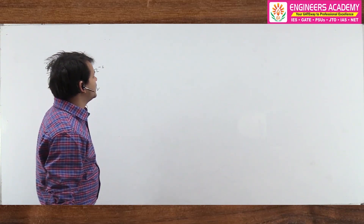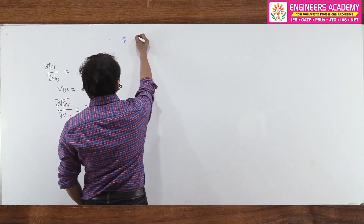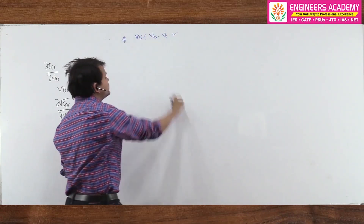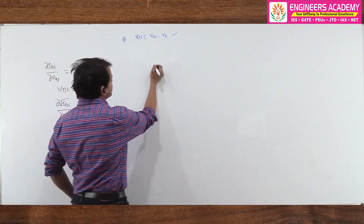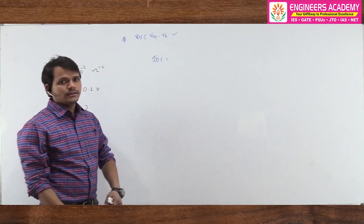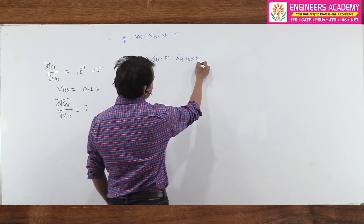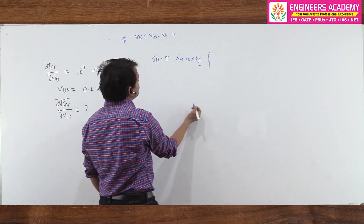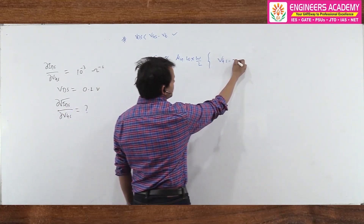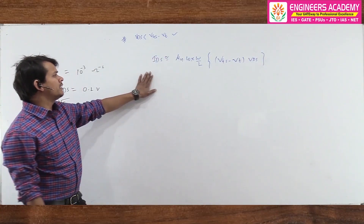First, let's write the equation for the linear region. Whenever the MOSFET operates in the linear region — that is, when Vds is less than (Vgs − Vt) — the drain current is approximately: IDS = μn·Cox·(W/L)·(Vgs − Vt)·Vds. This is the current expression when the MOSFET operates in the linear region.